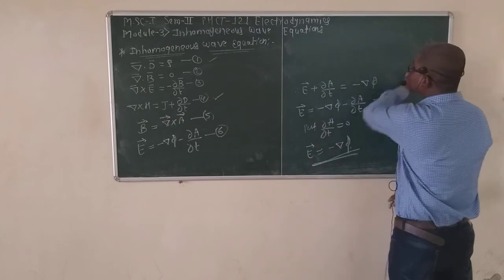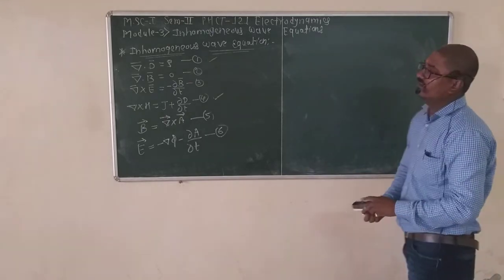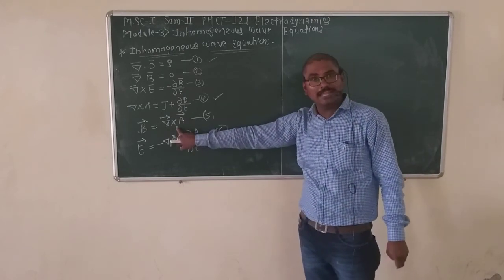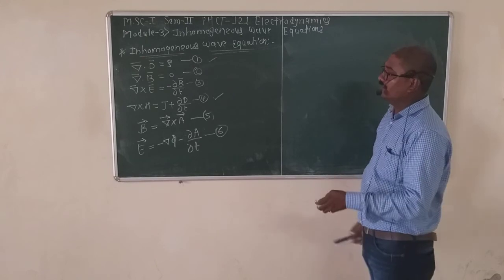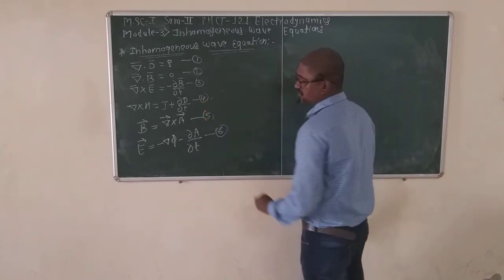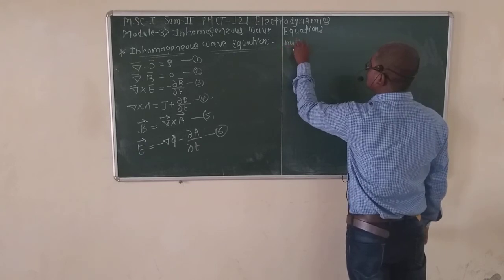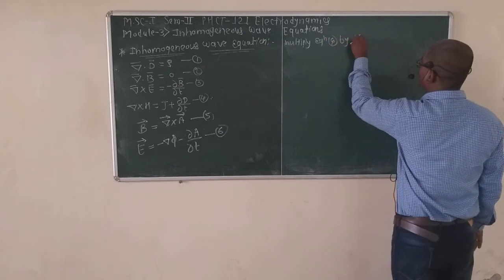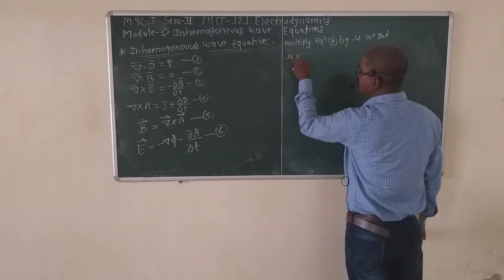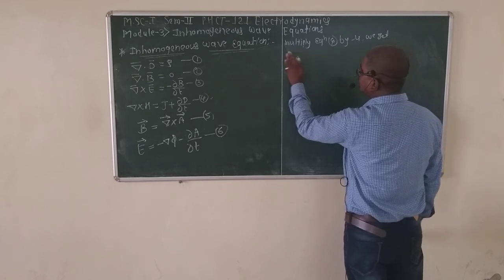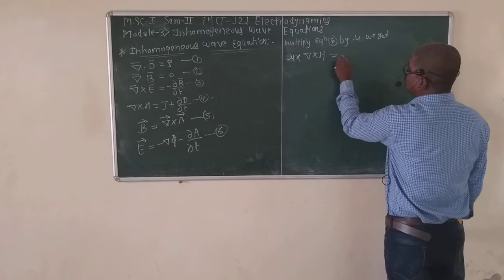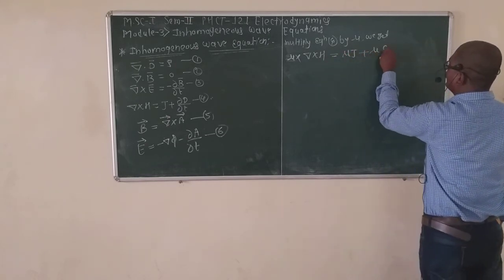Our aim is to obtain the two inhomogeneous wave equations in terms of magnetic vector potential A and scalar potential phi. Then, by using these, we obtain the inhomogeneous wave equation. We use equation number 4, and the next step is to multiply equation 4 by mu.